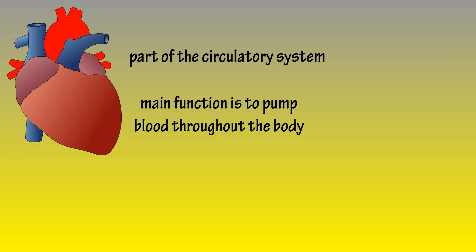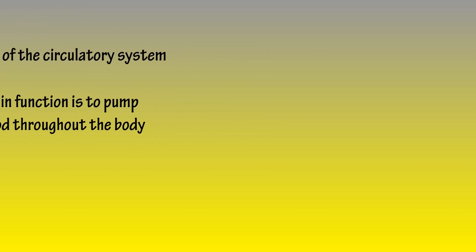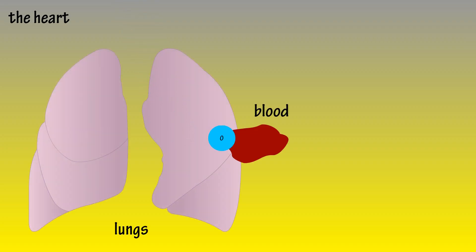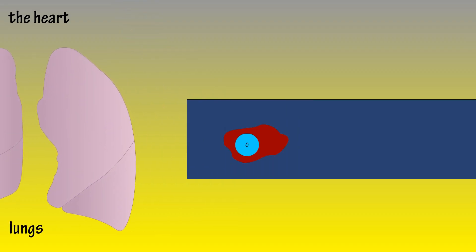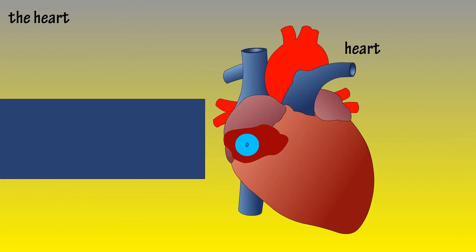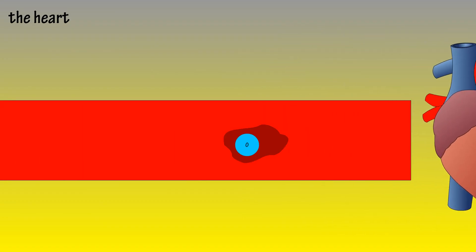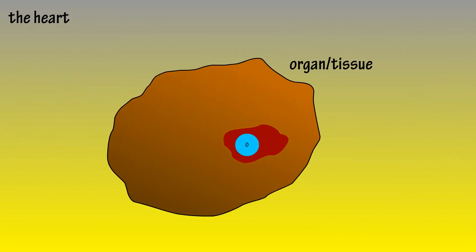Then we'll go through how the heart works. We'll start at the lungs where blood picks up oxygen. It then flows to the heart where it gets pumped throughout the body to different organs and tissues. At the organs and tissues, blood drops off oxygen and picks up carbon dioxide.